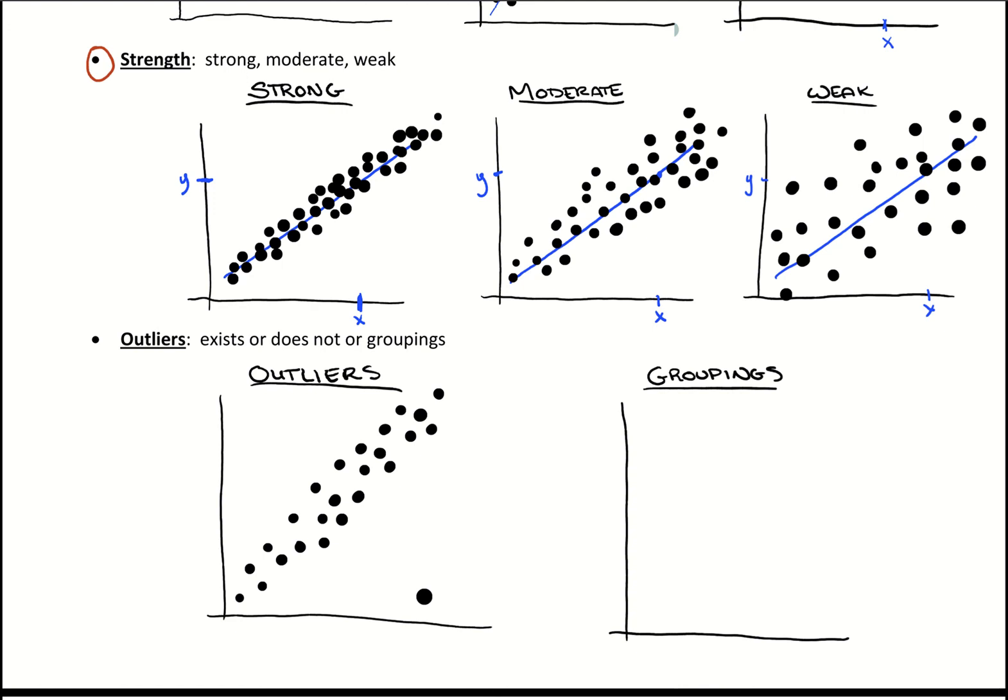Then groupings, what we want to be careful of is if we see this clear trend coming through and it's nice and linear, and then maybe we have a second linear trend, but it has kind of a different slope to it. It starts at a different place.